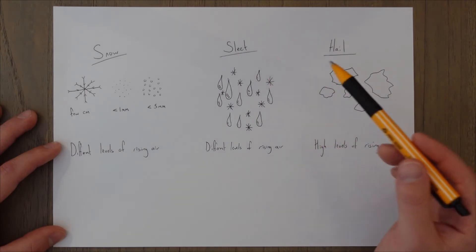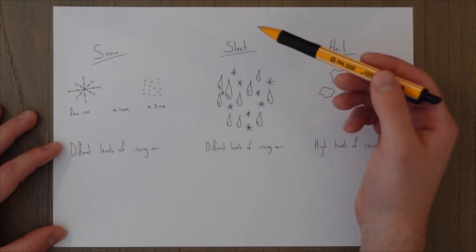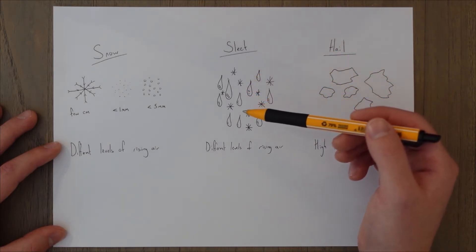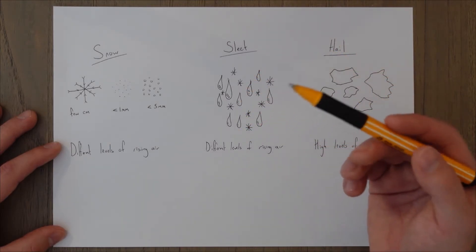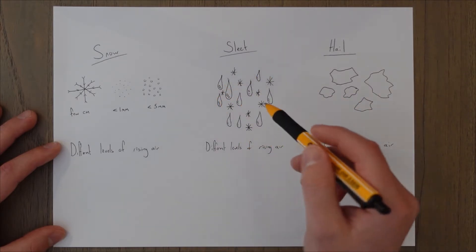You also have sleet which is a combination of rain and snow or it can be snow that has fallen down and partially melted on the way down so you get a combination of both water and ice.